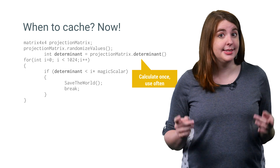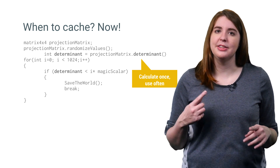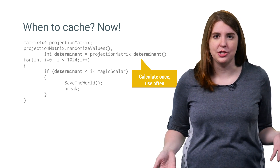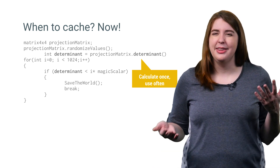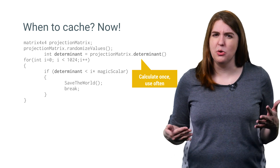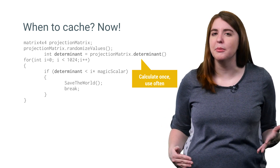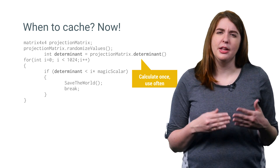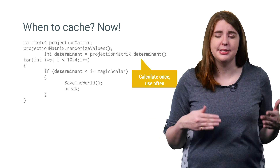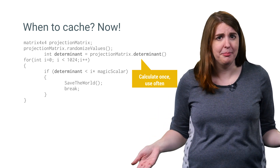Instead, compute and save the result outside of the loop, and let the inner portions of your loop reference that cached result. This may sound obvious when presented like this, but you would be surprised how even seasoned developers get caught by it — like when calling get current user inside of a loop in a single user environment, like a mobile game.